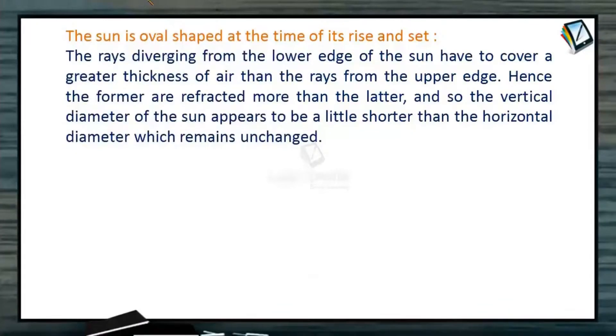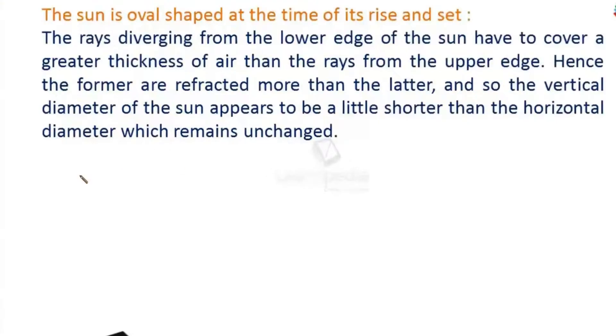So let's start with some interesting facts about light. The sun is oval shaped at the time of its rise and set. Because at the time of sunrise or sunset.